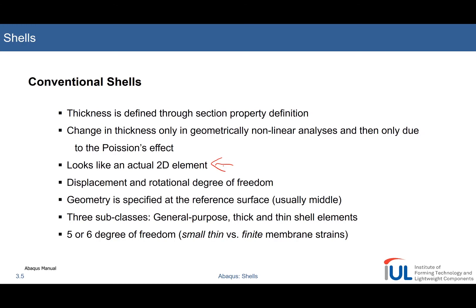The thickness change is a property that is only considered in nonlinear analysis and then only due to the Poisson's effect. By compressing a sheet in-plane you cannot compress it in thickness, but if you elongate it, it can geometrically shrink in the thickness direction due to Poisson's effect. Regarding displacement and rotational degrees of freedom — here you have true inherent rotational degrees of freedom as explained in the lecture, and these should also be specified. The geometry must have a reference surface on which the element is defined.